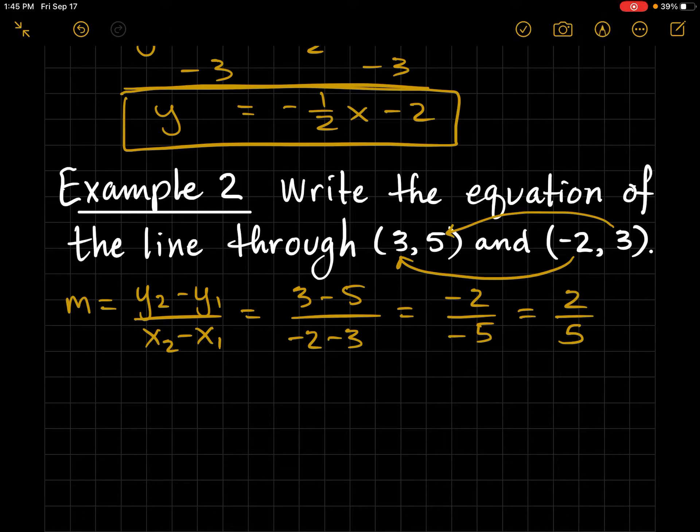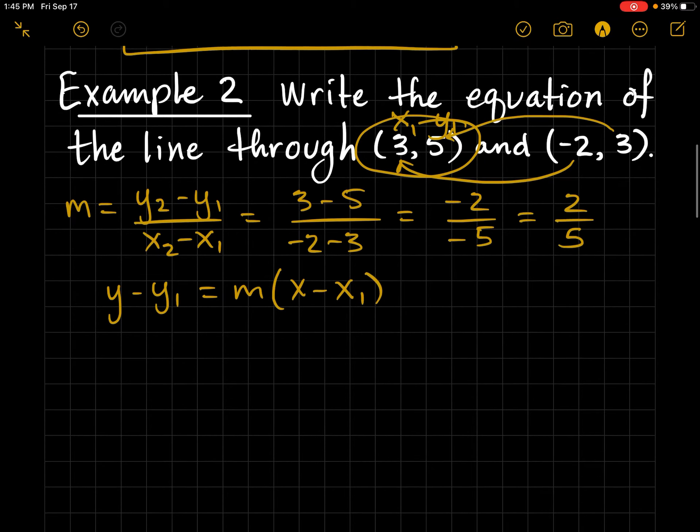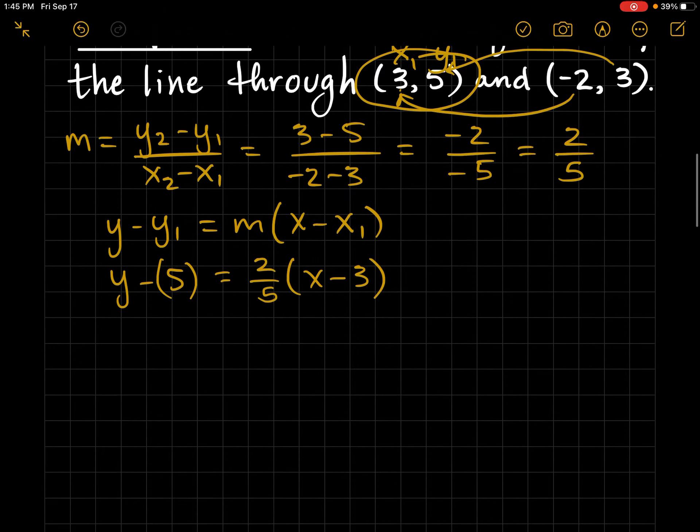And now, I can pick one of these points. I'll just go with the first point and let that be my x1, y1. So now, I always like to write the formula and then start to plug things in. So I have y minus 5 because I'm using this point. And the slope is 2 fifths x minus 3.